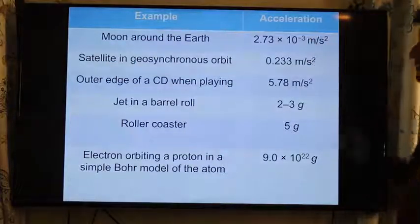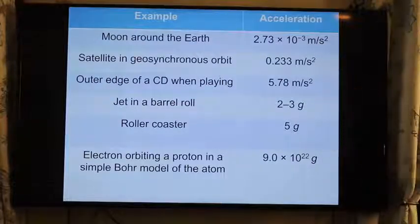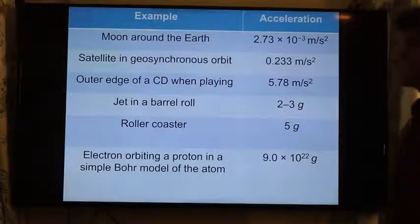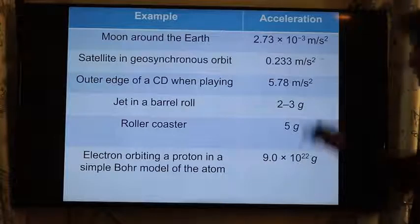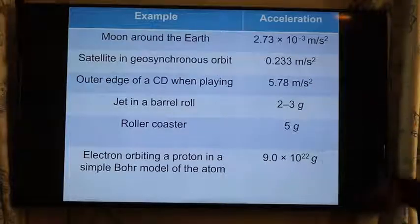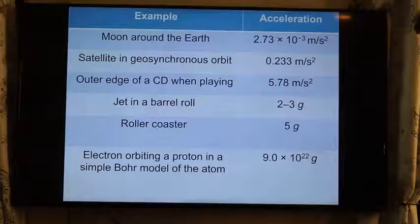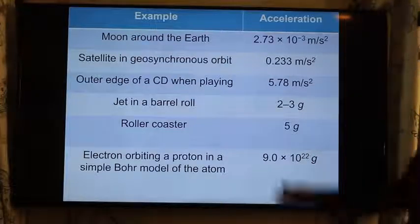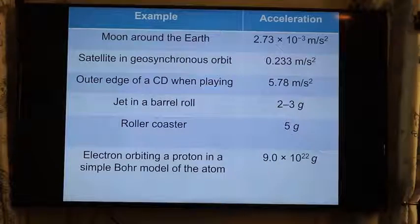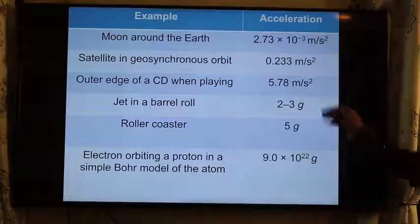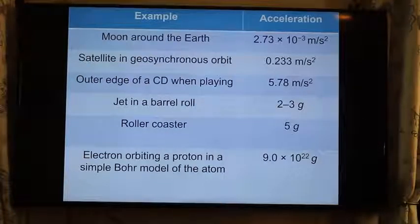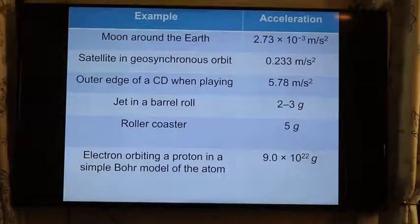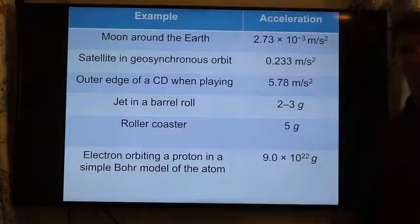And here's the acceleration of the Moon around the Earth. It's on a circular path, not very great at all. Satellites in geosynchronous orbit actually experience a much lower acceleration than we experience on the Earth. Actually, they don't feel it. They're weightless, but that's acceleration due to the force of gravity at that location. CD player gets about 5.78 meters per second squared. When played, DVDs rotate much faster, so their acceleration is higher. Jets in a barrel roll, roller coasters at most 5 g's or 50 meters per second squared. And if you're an electron orbiting a proton, this is how much acceleration you experience.